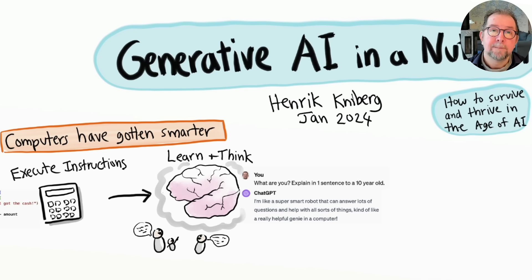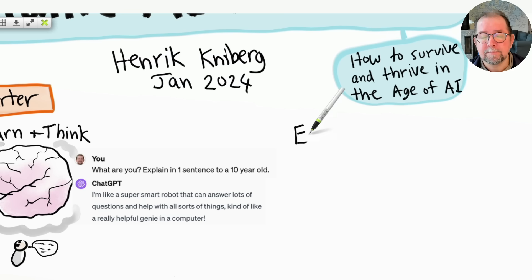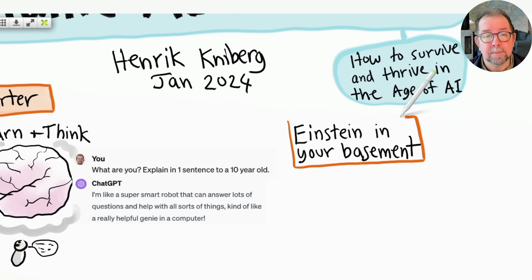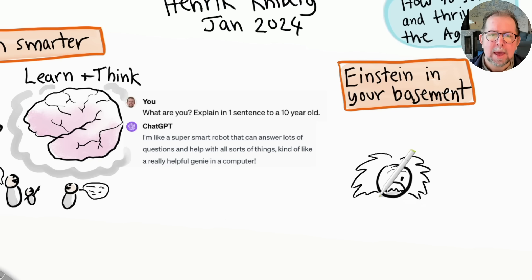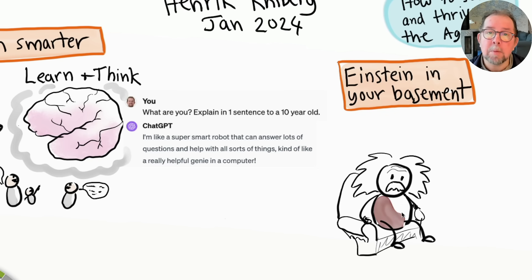So here's a silly but useful mental model: You have Einstein in your basement. In fact, everyone does. And by Einstein, I really mean the combination of every smart person who ever lived. You can talk to Einstein whenever you want. He has instant access to the sum of all human knowledge and will answer anything you want within seconds, never running out of patience.